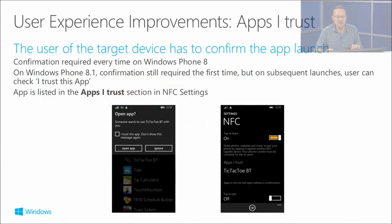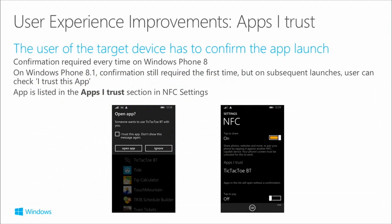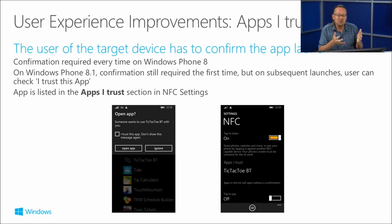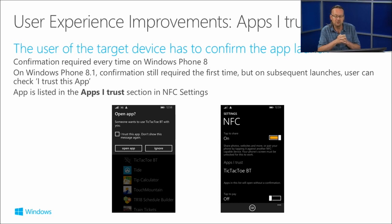This is that user experience - the apps I trust thing. Whenever you tap devices together to initiate something over NFC, the first time you'll have to get that confirmation. But thereafter you get this 'I trust this app, don't show this message again' checkbox. If you check that, then it's a trusted app. You can see all the apps you trust in the NFC settings in the control panel, and you can also remove them from there as well.